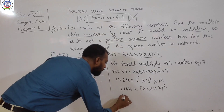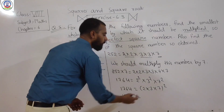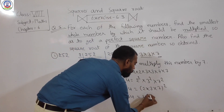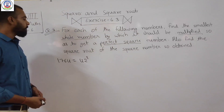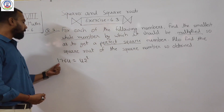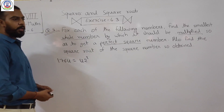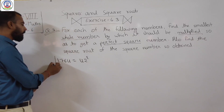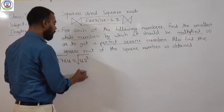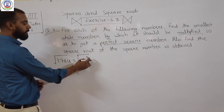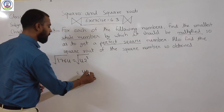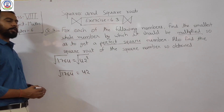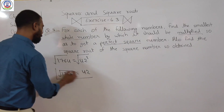Now we have to find the square root of 1764. Since 1764 = (2 × 3 × 7)², that equals 42². So the square root of 1764 is 42.